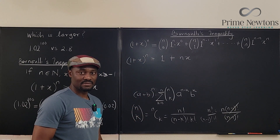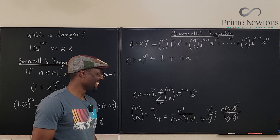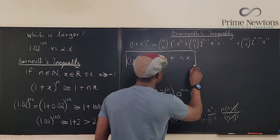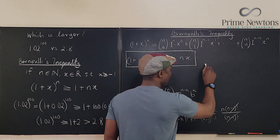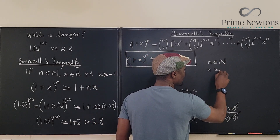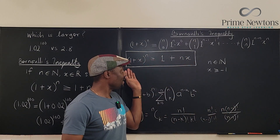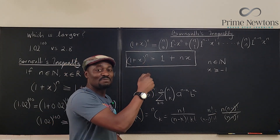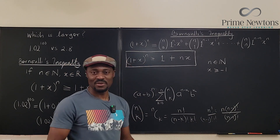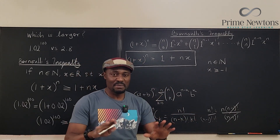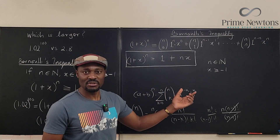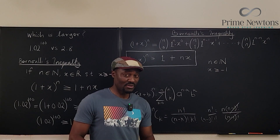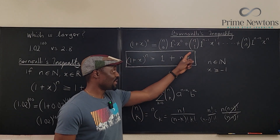And that is Bernoulli's inequality. You just follow the binomial expansion to where it leads, and this is where it leads: (1 + x)^n is greater than or equal to 1 plus nx. The conditions are: n is a natural number, and x is greater than or equal to negative 1. This is a clear proof — clearer than proving it by mathematical induction.